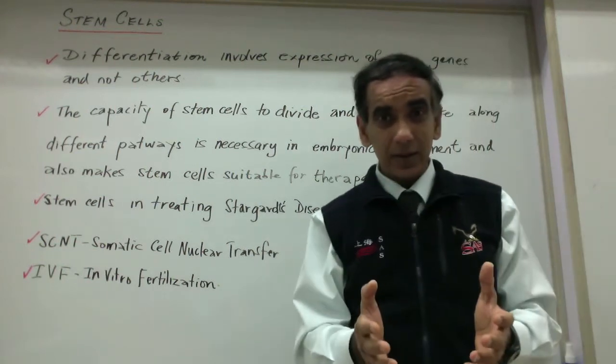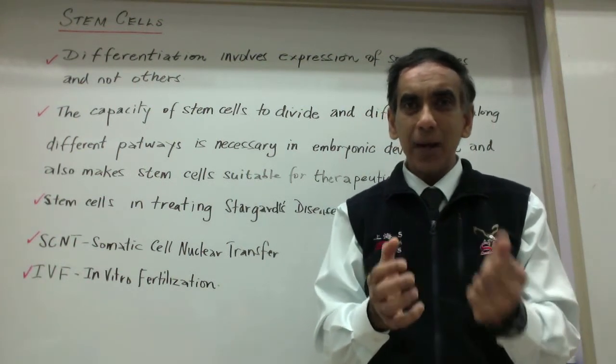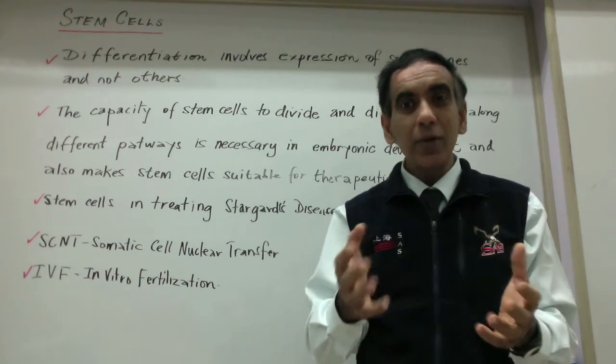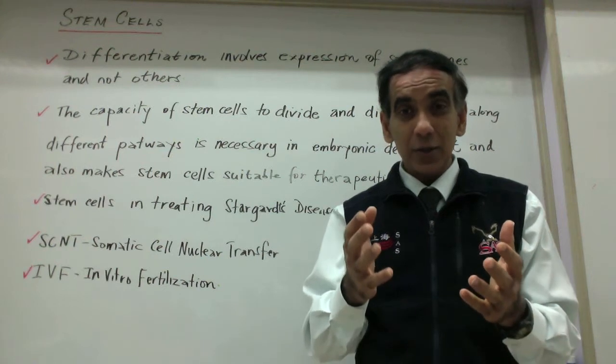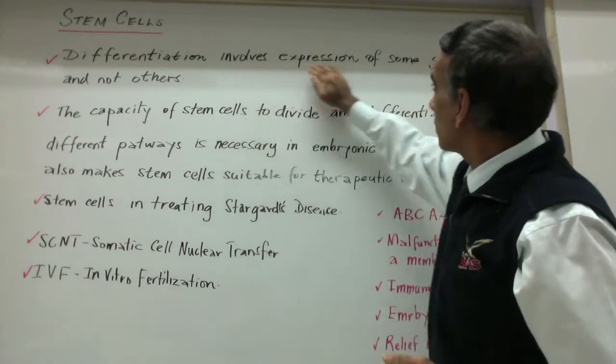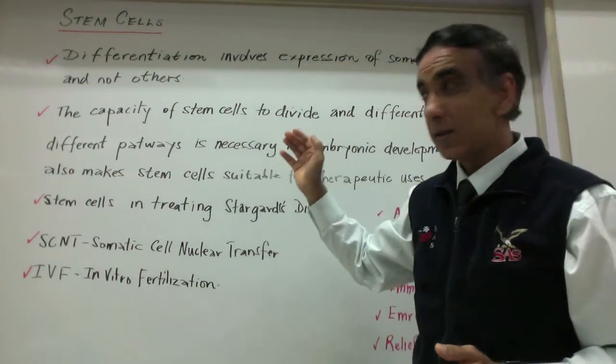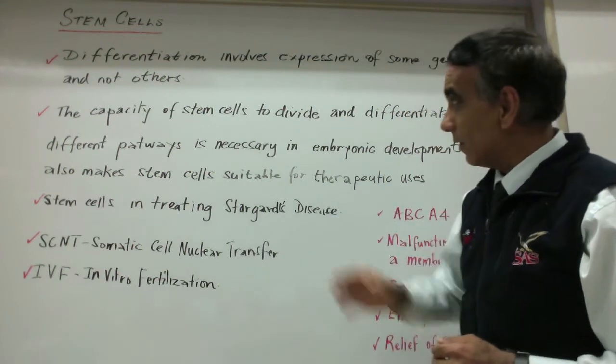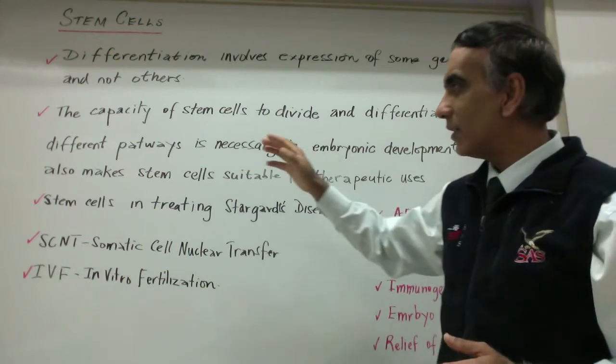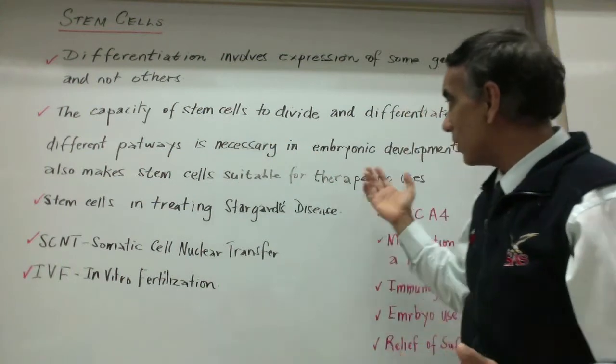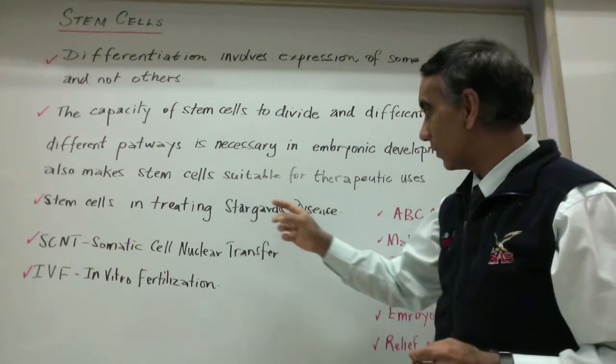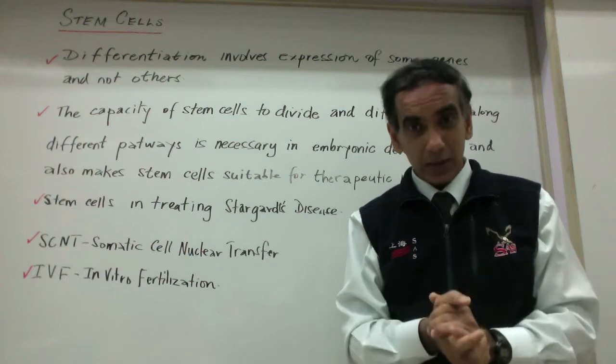Stem cells are cells that have the power to produce more of themselves but to differentiate and to become other cell types. Differentiation involves the expression of some genes but not others. The capacity of stem cells to divide and to differentiate along different pathways is necessary in embryonic development and this is what makes stem cells suitable for therapeutic uses.